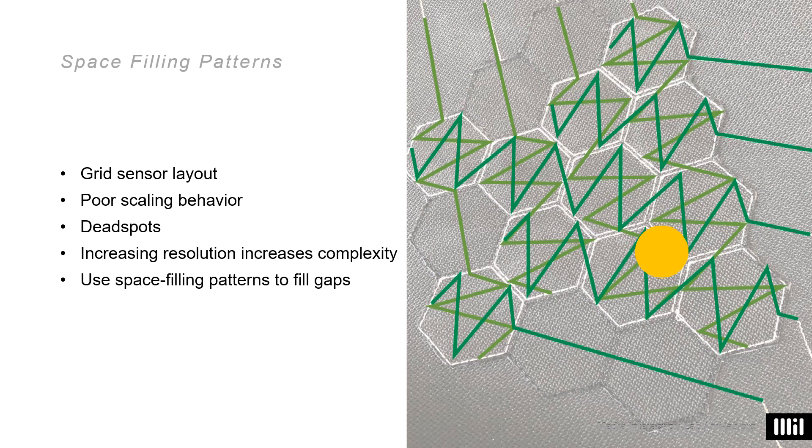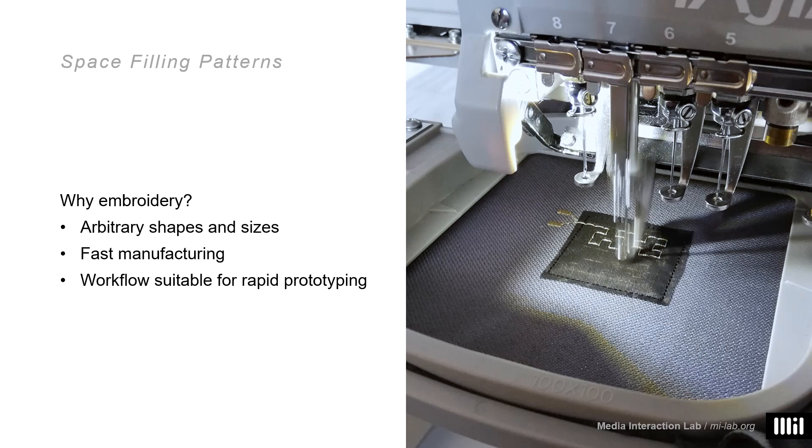For that reason, we propose to use space-filling patterns instead. You use the same number of electrodes, but you guide them in a sort of winding manner. This way, they cover most of the space and you get a somewhat uniform responsiveness all over the sensory area. In the textile field, this takes us to embroidery because embroidery machines are specifically designed and tuned for stitching arbitrary shapes and sizes. Also, the workflow of designing or even automatically generating shapes and patterns on PC and then sending them to the machine is quite useful for rapid prototyping.